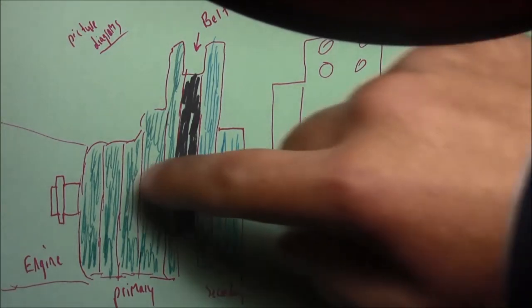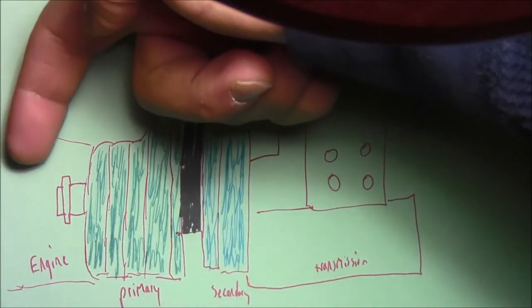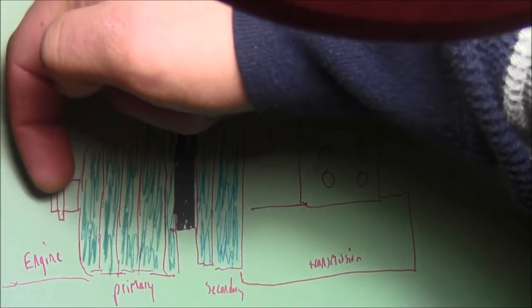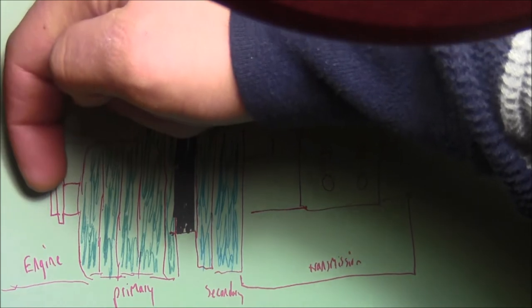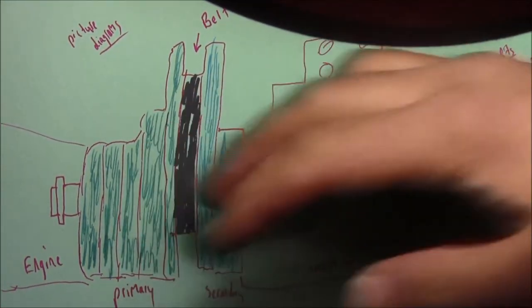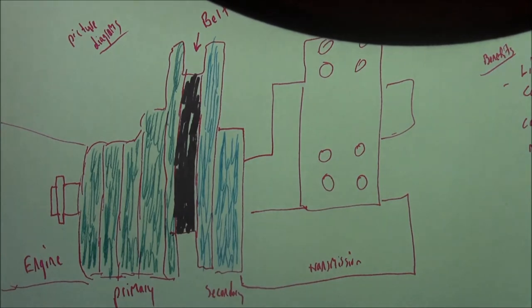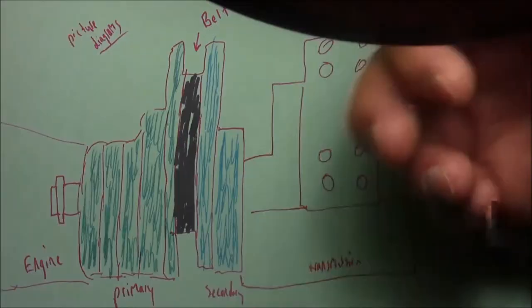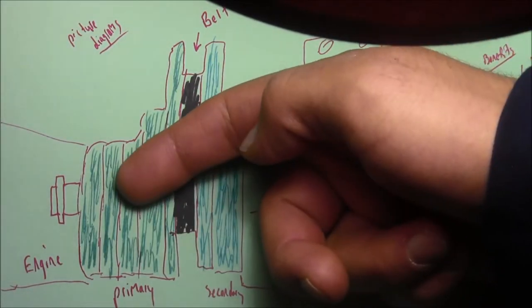You have your engine, your crankshaft is turning. The engine's power is being transmitted to the crankshaft, and you have the primary clutch and a secondary clutch in this CVT version.